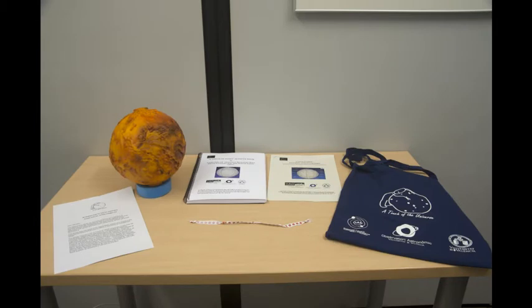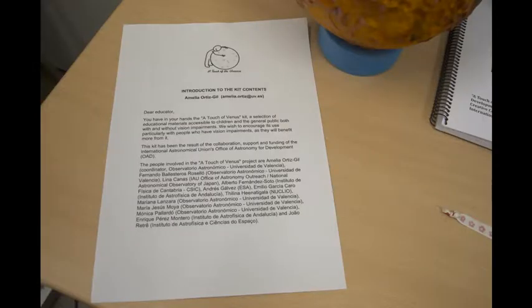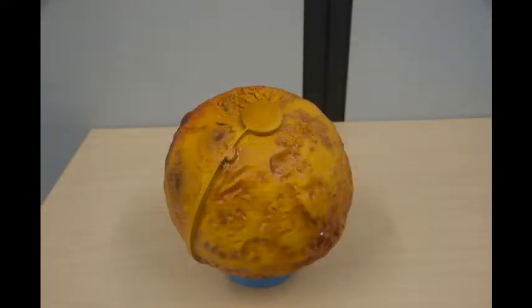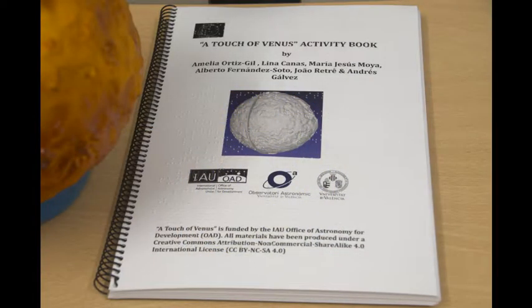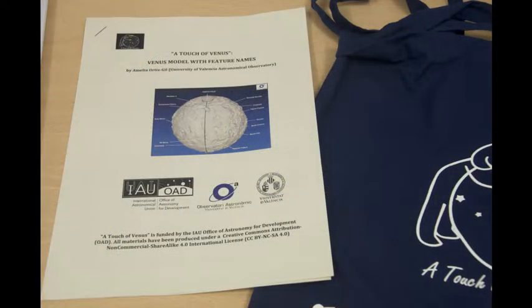It contains the following items: a presentation letter, a Venus tactile globe, an activity book in Braille and normal printing with some suggestions on how to use the Venus globe, and an annotated map with snapshots of the digital model with the names of some features.